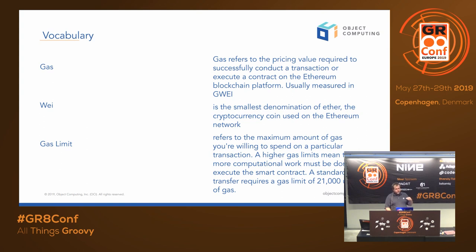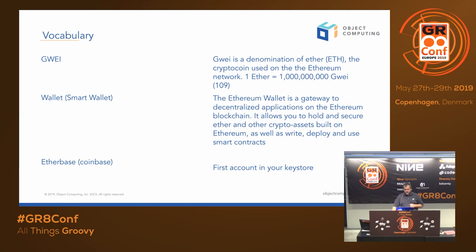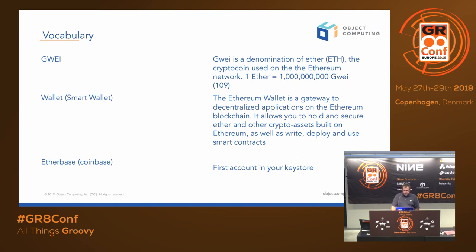If the network is really busy and it costs too much to process the transaction at the moment, you can set a gas limit to lower your cost and wait until there's enough gas you want to spend. Then there's Gwei — that's the denomination of ether we work with in the actual Ethereum system. One ether equals a billion Gwei, so it's very small fractional amounts. When we talk about a wallet or smart wallet, that's the gateway to decentralized applications on the Ethereum blockchain — it lets you hold and secure ether, deploy, and use smart contracts. The etherbase is the first account in your key store — if you fire up your own chain, that's going to be the base account.